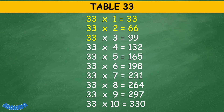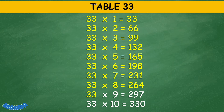Table 33: 33 times 3 equals 99, 33 times 4 equals 132, 33 times 5 equals 165, 33 times 6 equals 198, 33 times 7 equals 231, 33 times 8 equals 264, 33 times 9 equals 297, 33 times 10 equals 330.